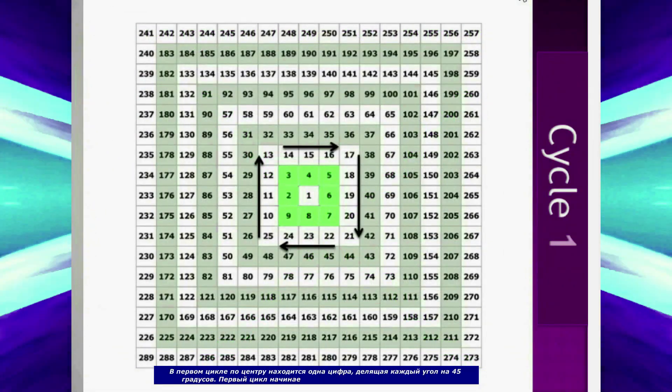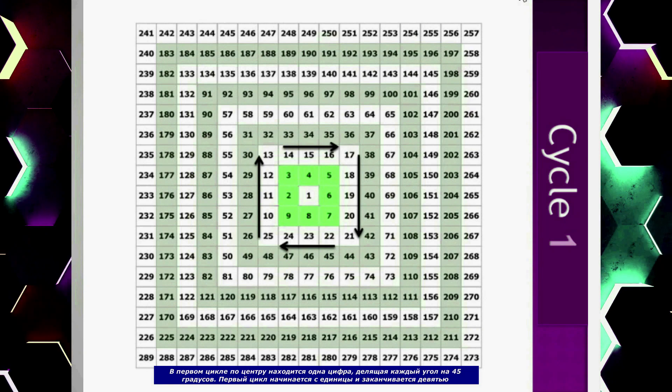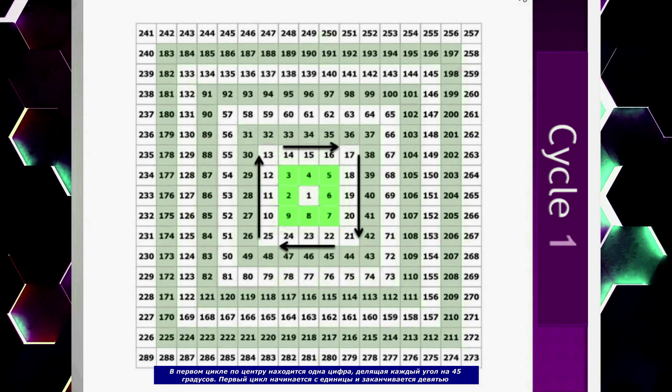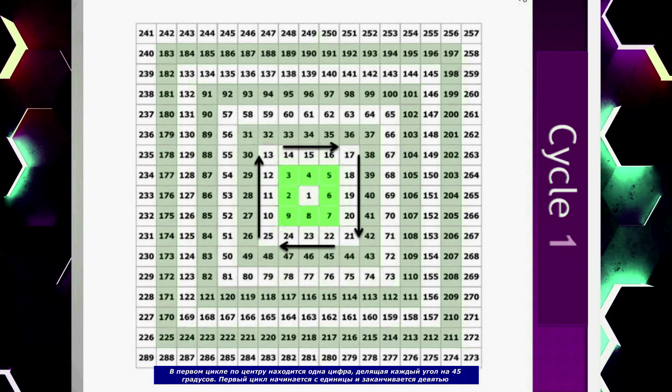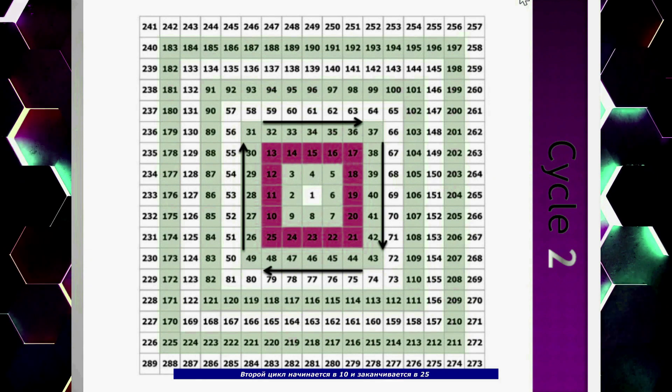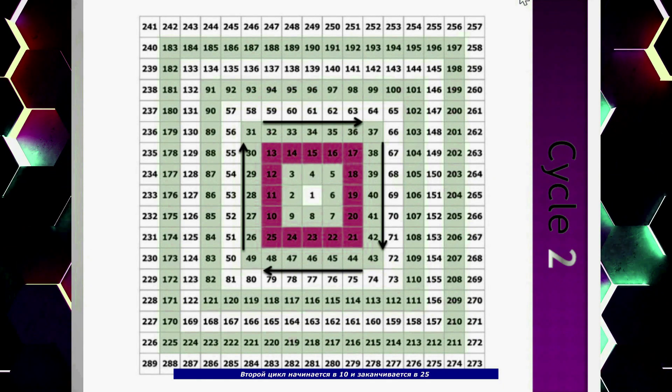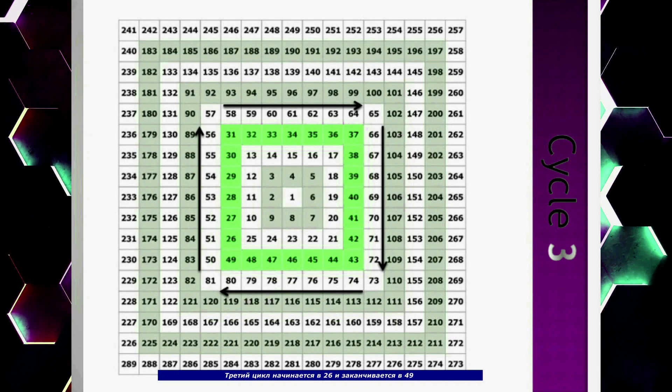In the first cycle, there is one digit around the center, dividing each corner by 45 degrees. The first cycle starts with 1 and ends with 9. The second cycle starts at 10 and ends at 25. The third cycle starts at 26 and ends at 49.